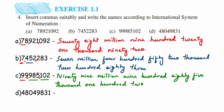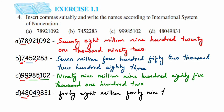For the last number, placing the commas: after eight we get a comma, after zero we get a comma. In the millions period we have forty-eight, so 48 million. In the thousands period we have forty-nine, so forty-nine thousand. In the ones period we have eight hundred thirty-one.